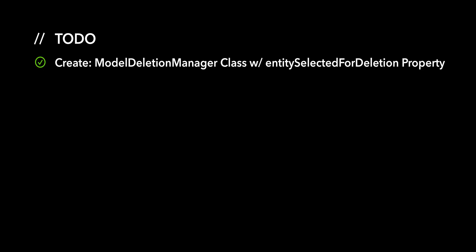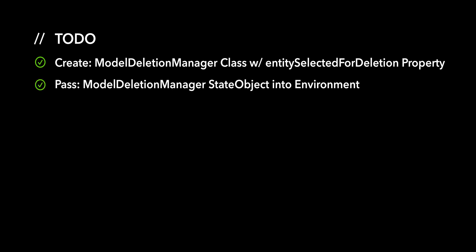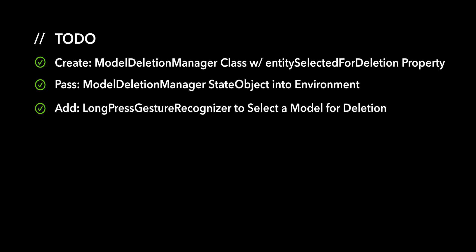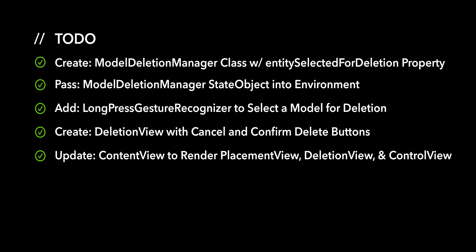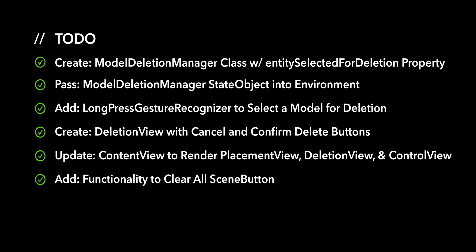We have several action items for this video. First, we'll create a model deletion manager class with an entity selected for deletion published property. Second, we'll pass a model deletion manager state object into the app environment. Next, we'll add functionality to use a long press gesture recognizer to select a model for deletion. After that, we'll create a deletion view with cancel and confirm delete buttons. Next, we'll update the if statement in content view to render a placement view, a deletion view, and a control view based on specified conditions. And finally, we will add functionality to the clear all scene button.